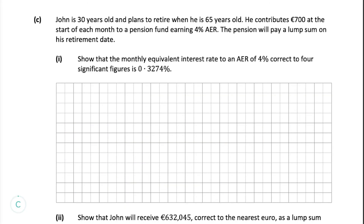Moving on to part (c): John is 30 years old and plans to retire at 65. He contributes €700 at the start of each month to a pension fund earning 4% AER. Part (i) asks us to show that the monthly equivalent interest rate correct to four significant figures is 0.3274%.